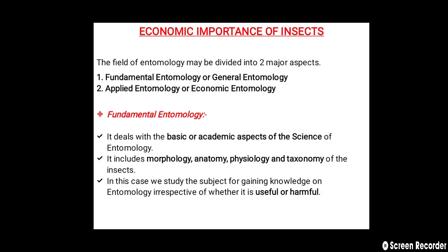The field of entomology may be divided into two major aspects. First is fundamental entomology, also called general entomology, and the second aspect is applied entomology, also called economic entomology. Let us see them one by one. Fundamental entomology deals with the basic or academic aspects of the science of entomology.